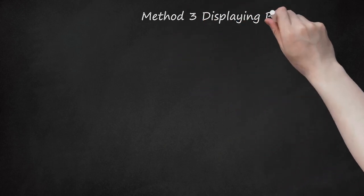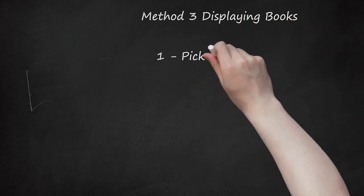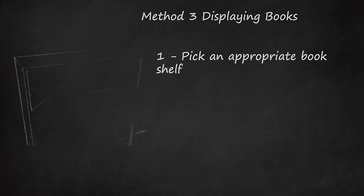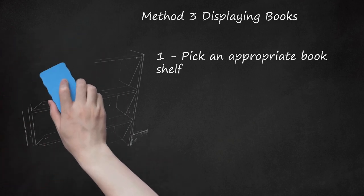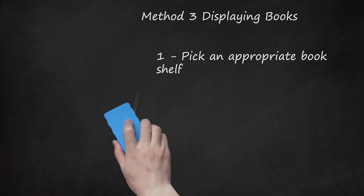Method 3: Displaying Books. Pick an appropriate bookshelf. The best, most organized, and most secure way to store books is on shelves designed for the purpose. It's clean, accessible, and allows you to easily peruse the books that you have quickly. Natural, pre-treated wood and sheet metal are the best surfaces on which to store books. Storing books on shelves with synthetic paint or other chemicals can leach into the binding and paper.